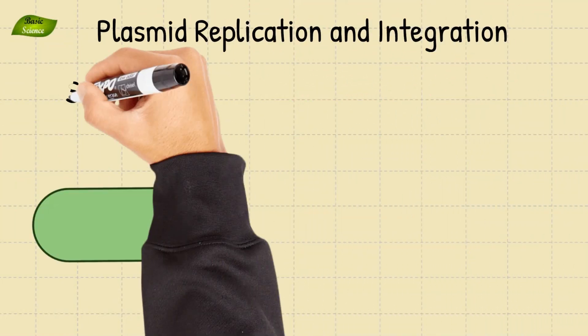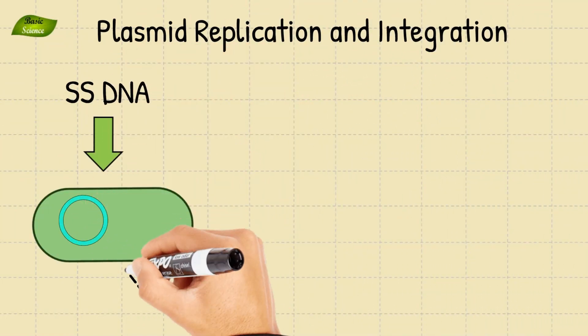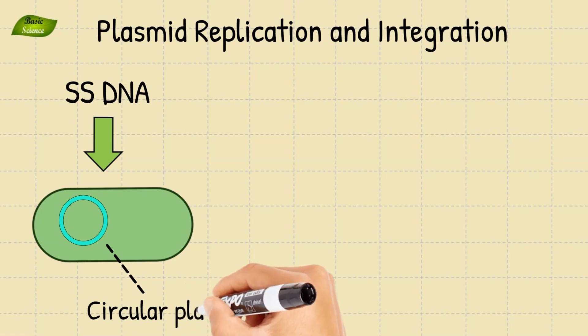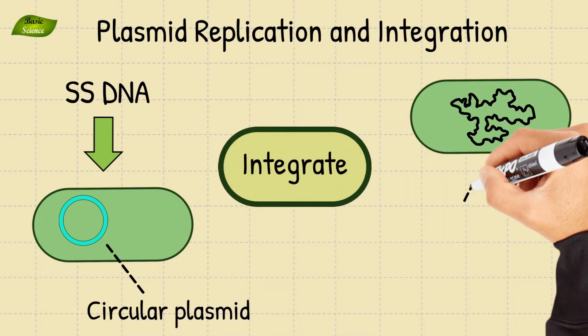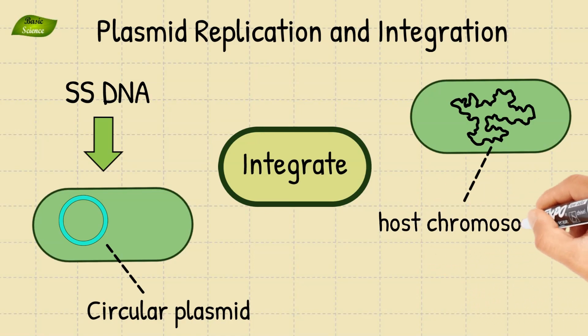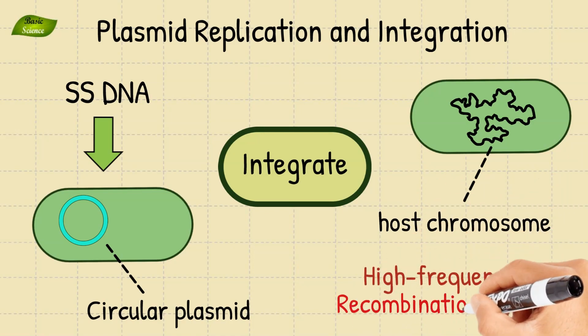In the recipient cell, the transferred single-stranded DNA is replicated to form a circular plasmid. Occasionally, conjugative plasmids can integrate into the host chromosome, leading to high-frequency recombination events.